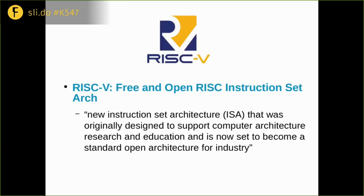About 10 years ago at the University of California, Berkeley, there was a computer architecture research group. In order to do their research into computer architecture, they didn't want to be constrained by having to license some commercial ISA, so they created a new instruction set called RISC-V. This is the fifth RISC architecture to come out of Berkeley, going all the way back to the 80s. The RISC-V ISA is free and open for anyone to use, licensed under a Creative Commons license.